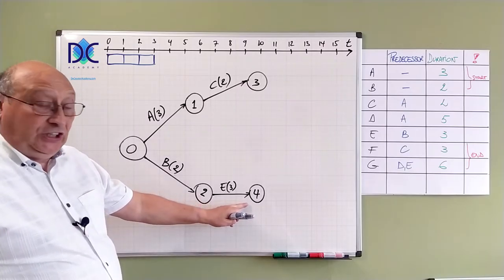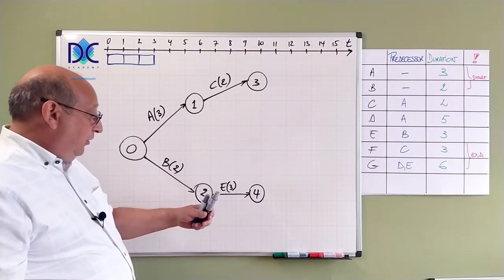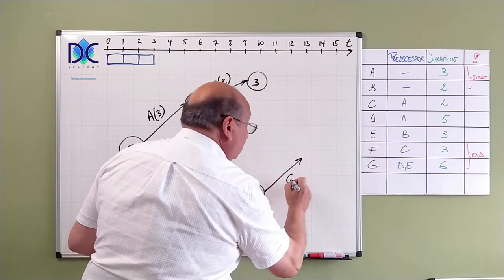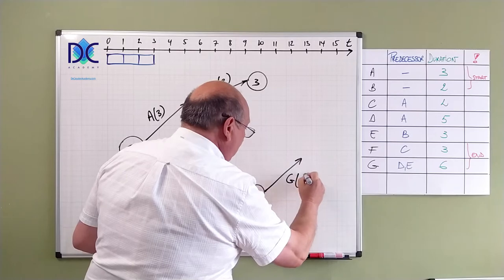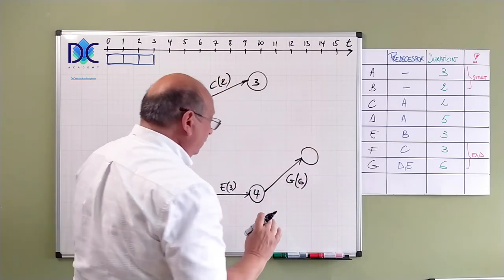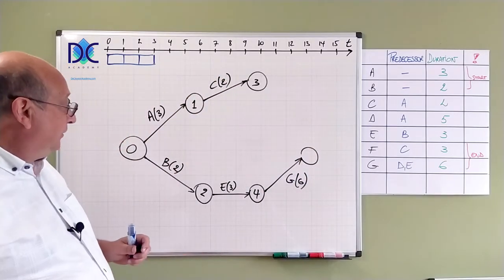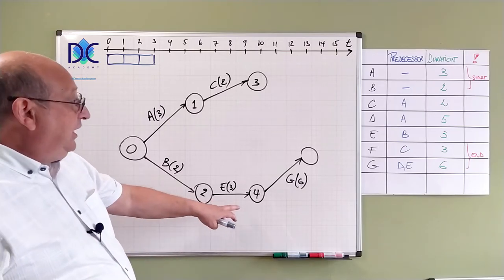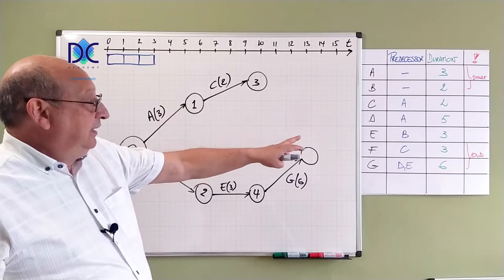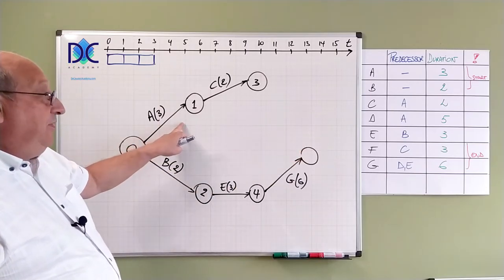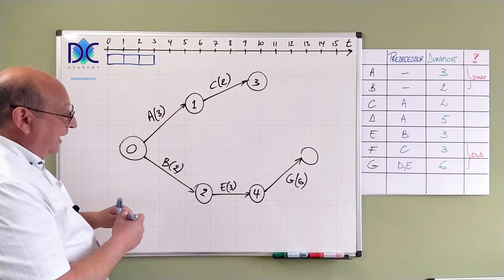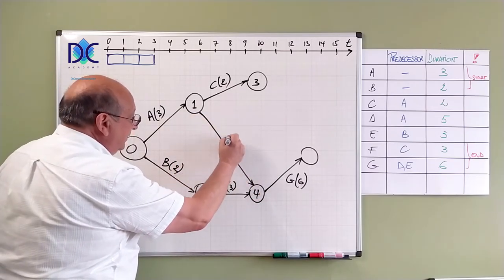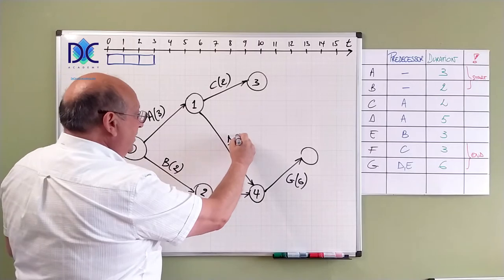After E we have G. So G is one of those activities at the end of the project. So G has a duration of six and I put a note here. I don't put a number in there yet. Now we also know that G is after D and D is after A. So what I do now I put activity D here. D with a duration of five.